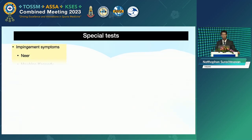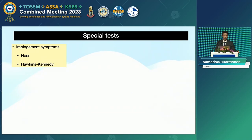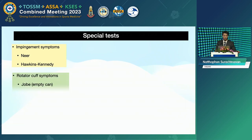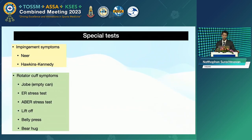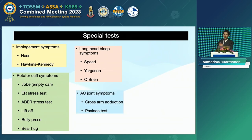In the special tests, we classify to clarify the pathology. The first is the impingement sign, especially Neer or the Hawkins-Kennedy. For the rotator cuff tendons, we classify for supraspinatus, infraspinatus — external lag sign test, lag sign test, lift-off, belly press, and back-hug test. For the long head bicep, we use the Speed, Yergason, or the O'Brien bicep load test. For the AC joint problem, we use the cross-arm adduction test, O'Brien, and press-in-off test.